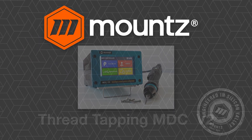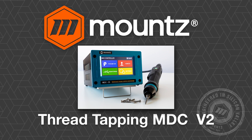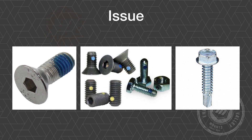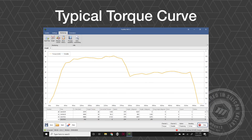In this video, let's take a look at the thread tapping feature of the MDC version 2 mounts DC control tools. For security reasons, a fastener may come with either thread locker, a nylon patch, or it could be a self-tapping screw, and in most cases this is going to produce more torque during the initial rundown than what the final torque is. So we have a thread tapping feature that allows the tool to go through the thread cutting process and then look for the final torque.